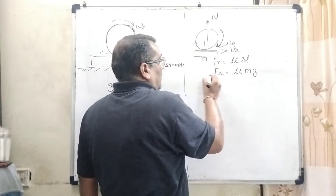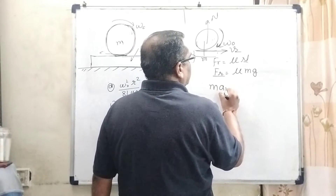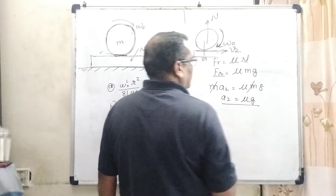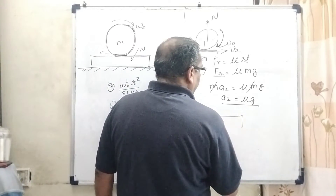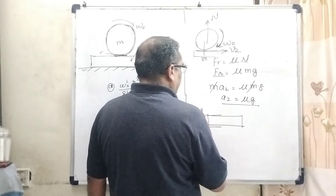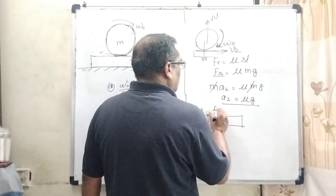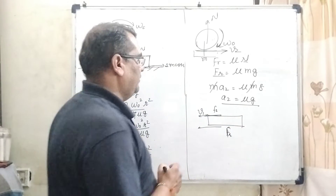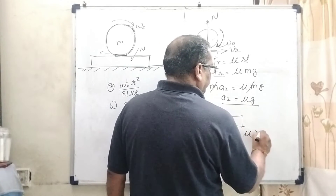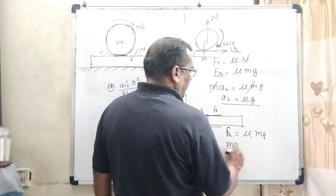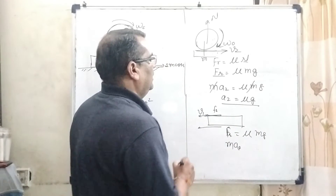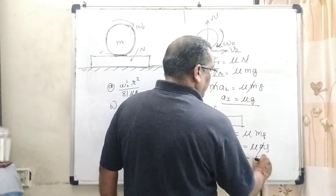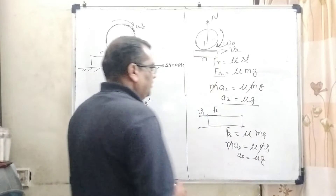So the normal force gives us: mass into acceleration A2 equals mu mg. The m cancels out, so A2 equals mu g. Now for the plank, its direction of velocity is opposite, considered V1, and friction force is also applied in that direction. So M into acceleration of plank Ap equals mu mg, and M cancels out, giving Ap equals mu g — the same magnitude but opposite direction.